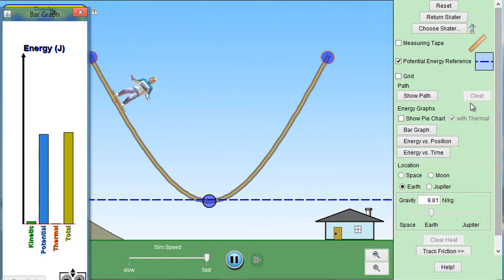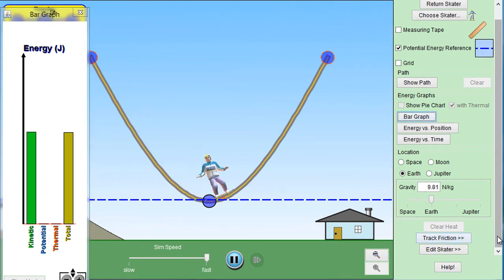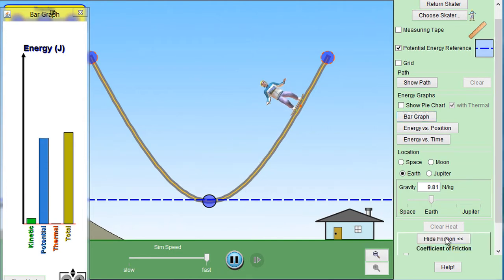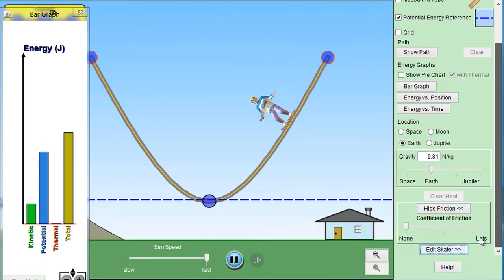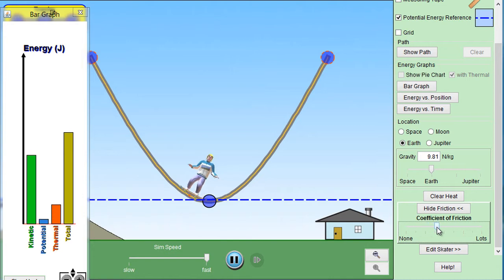Right now there is no friction. We can introduce friction by clicking track friction. And right now it's none. We can add it to something in the middle. Notice what happens to Ken.